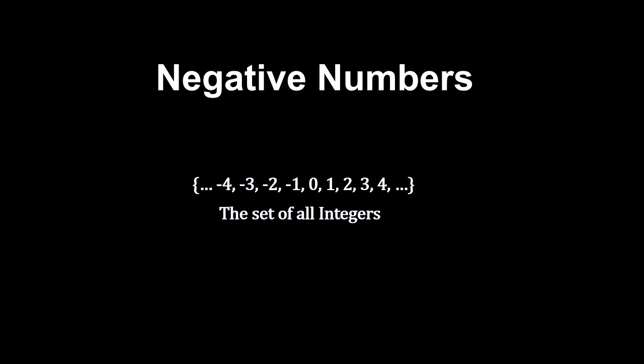The ancient Greeks did not have them. The earliest written reference to negative numbers was found in the Chinese book The Nine Chapters on Mathematical Art, written around 100 BCE. In fact, negative numbers were not fully accepted until the 19th century.